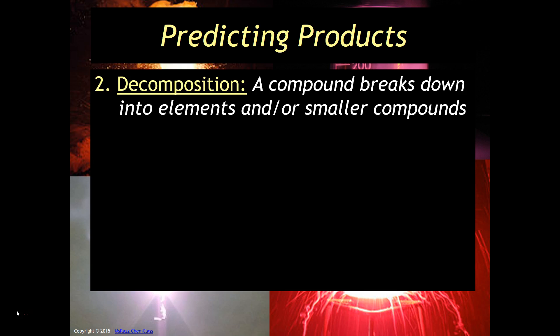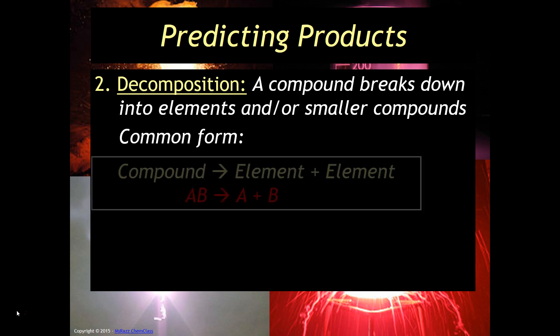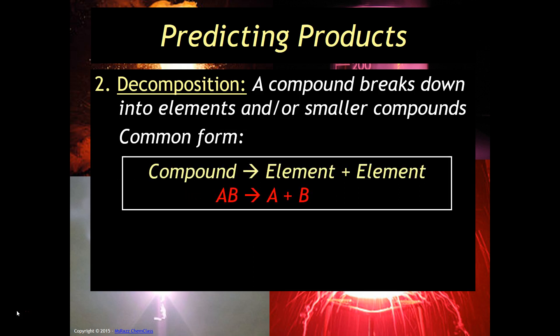A decomposition reaction is a compound that breaks down into elements and or smaller compounds. So for example, the common form would be compound, a yield sign, element plus element. So AB yields A plus B.